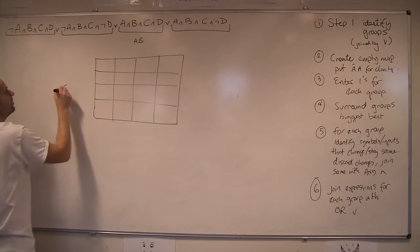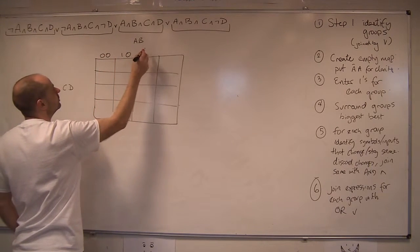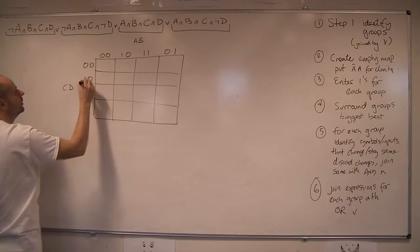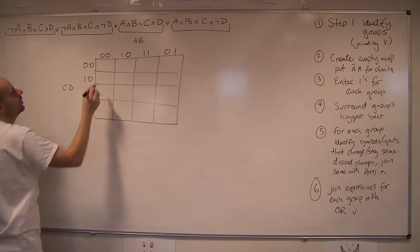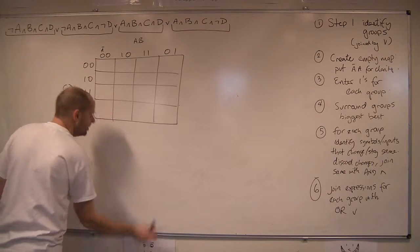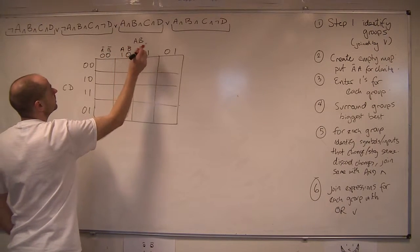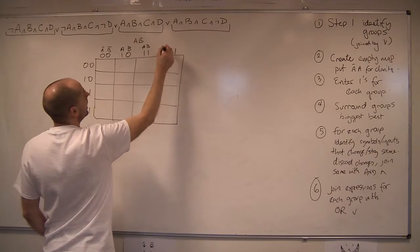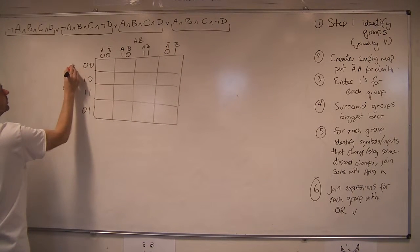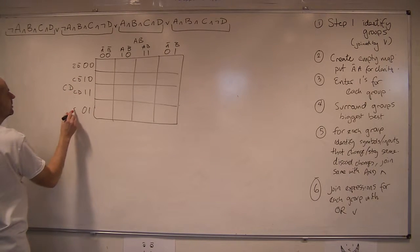Okay so I'm going to do the traditional ABCD — it doesn't actually matter. So I'm going to do 0, 0, 1, 0, 1, 1, 0, 1 — they represent not A, not B, A, not B, A, B, and not A, B. And then not C, not D; C, not D; C, D; and not C, D.